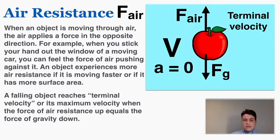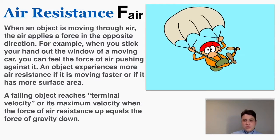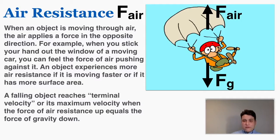The object is still moving, but that's its maximum velocity it can reach. Parachutes employ air resistance to slow the object down and prevent them from having a very high terminal velocity.